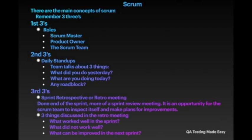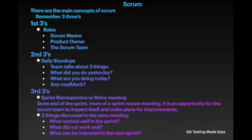Here are the main concepts of Scrum — remember three threes. The first three: roles. There are three roles: Scrum master, product owner, and the team. The Scrum master is similar to a project manager, responsible for making the process run smoothly, addressing issues that impact productivity, organizing meetings, and keeping all stakeholders up to date. The product owner is similar to a BA but owns more responsibilities — they own the requirements and are the keeper of requirements.